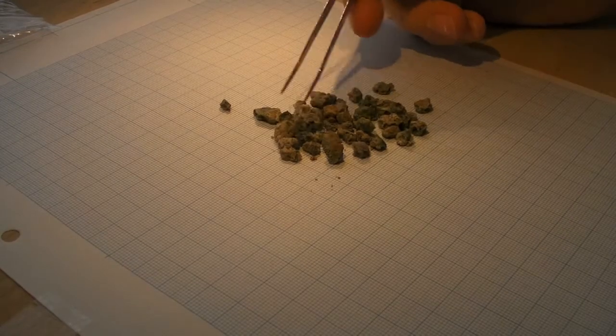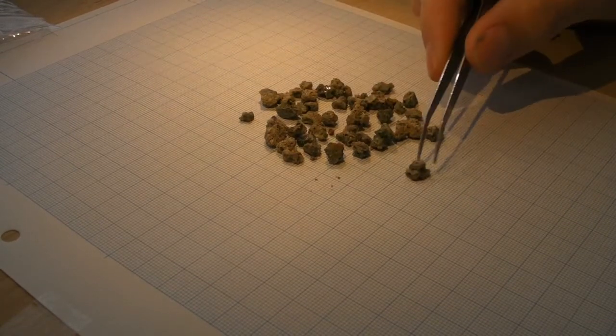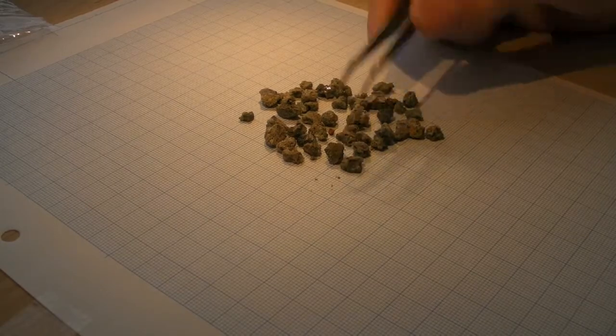Trinitite feels sort of like glass and has a surface covered in what looks to be bubbles. These bubbles become easier to spot under a microscope.